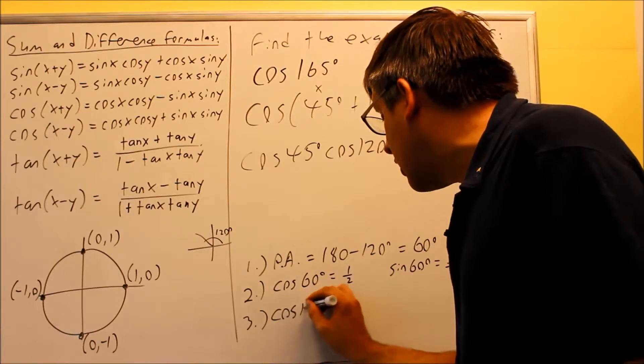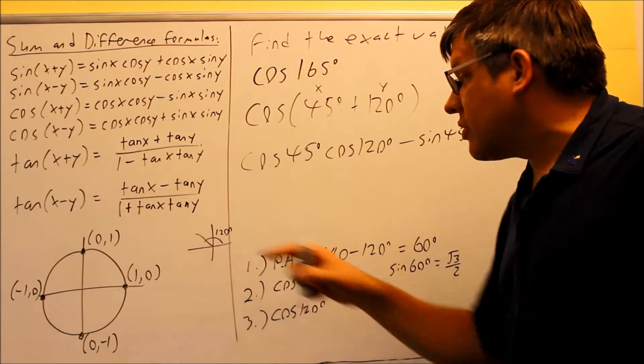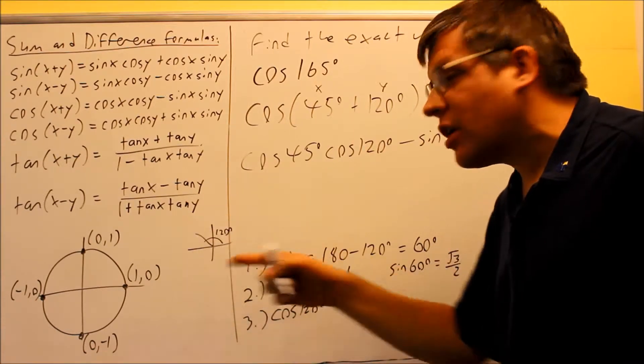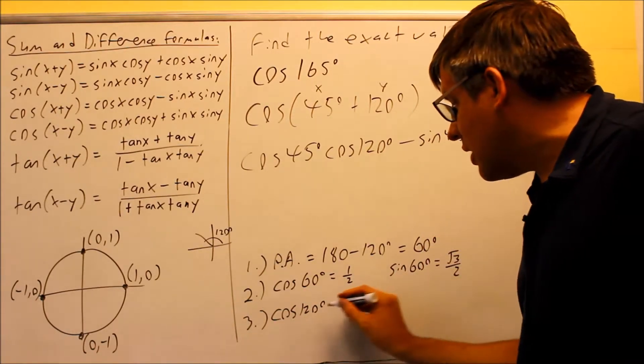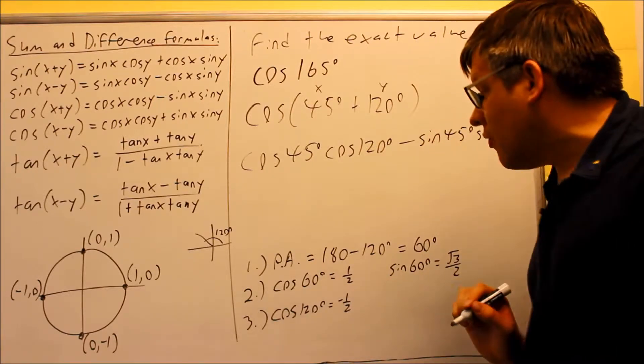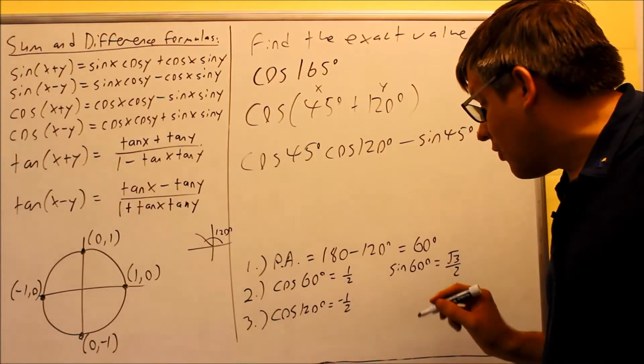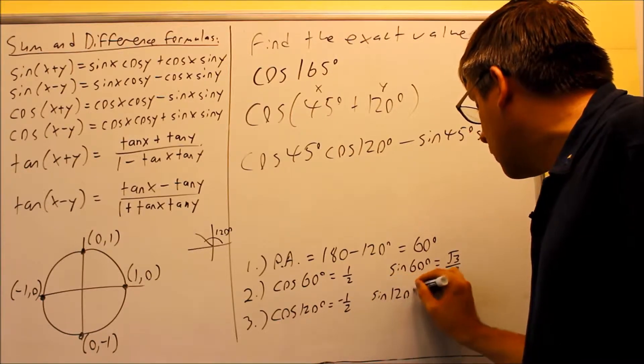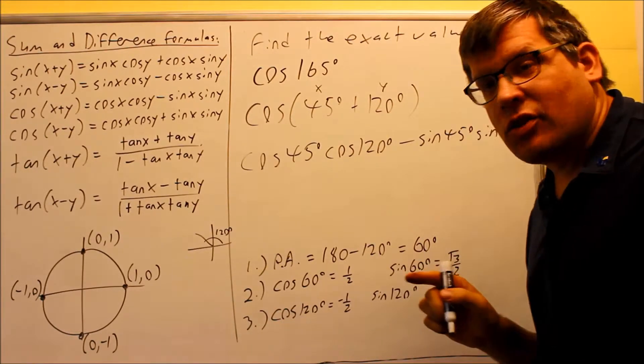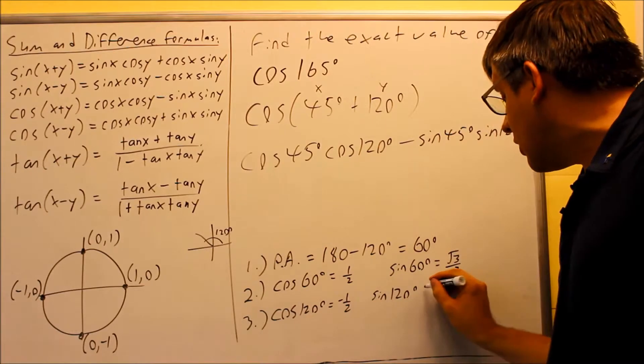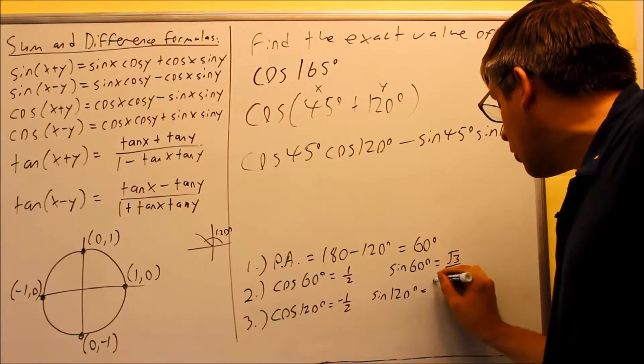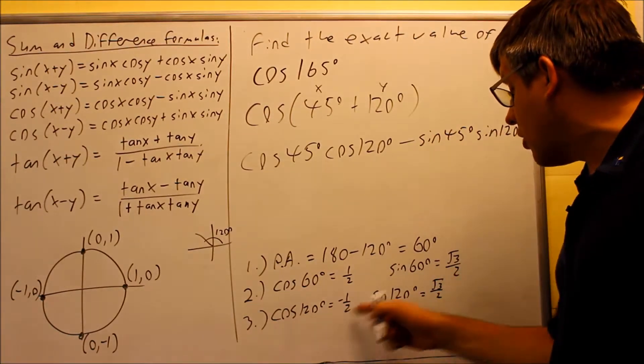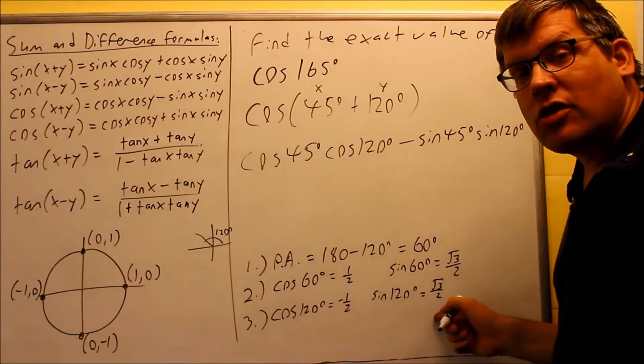So if I want to find cosine 120, 120 is here in the second quadrant. If I do all students, that means sine's positive, everything else is going to be negative, which means that cosine 120 needs to be a negative value, that has to be minus 1 half. For sine 120, we just mentioned that sine's got to be positive in that quadrant, so that means that this is going to be, we don't have to change the sign on root 3 over 2. So we've done reference angles, and we've found now the exact values for each of those.